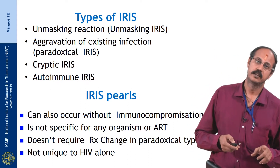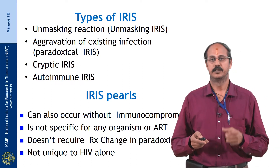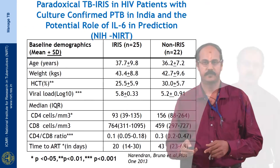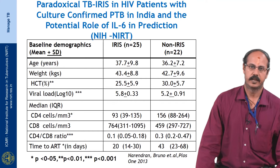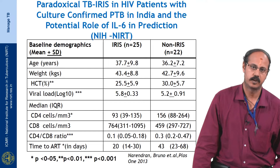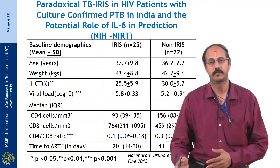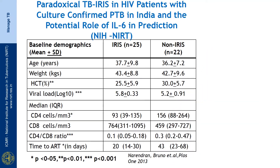Interestingly, a patient with virological failure started on second-line drugs can also develop IRIS. We conducted a study with NIH at NIRT to identify clinical predictors of IRIS — determining which patients are likely to develop IRIS subsequently. We found that low CD4 count, high viral load, and very low hematocrit are the key risk factors for developing IRIS.